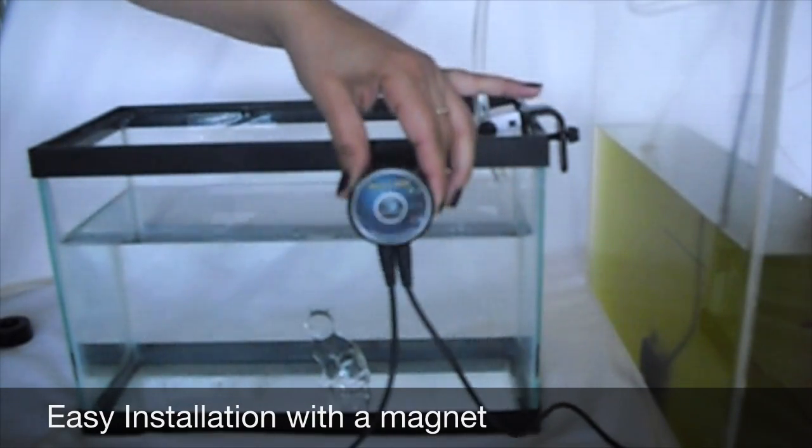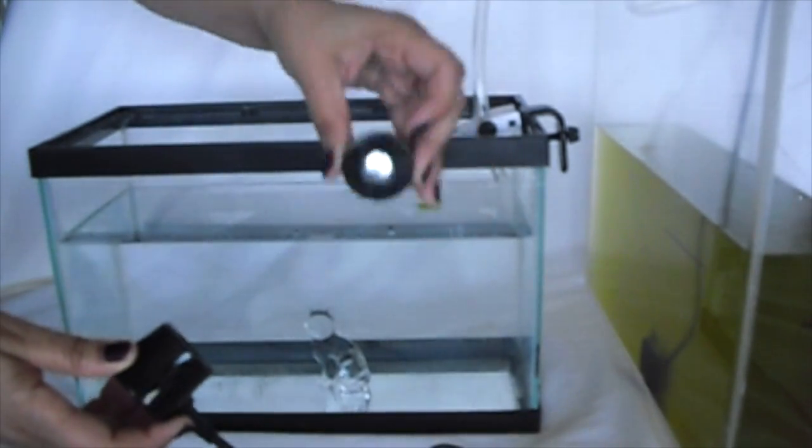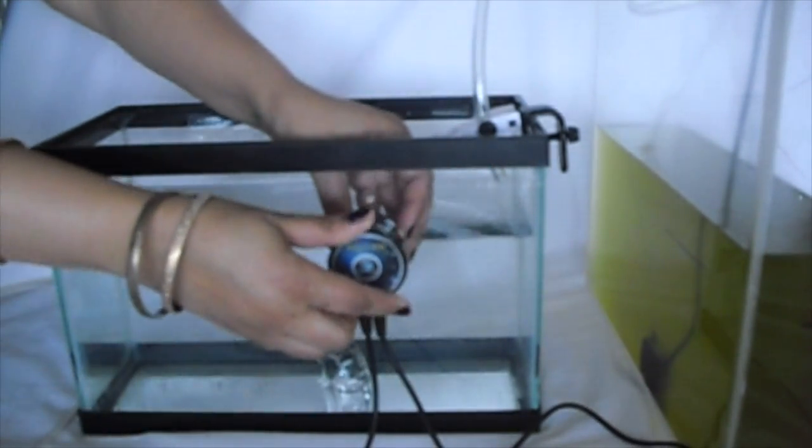The magnet allows attachment of the controller anywhere that you have easy access. You can even tilt it to the side and bend the wires around the back of the tank for a neater look.